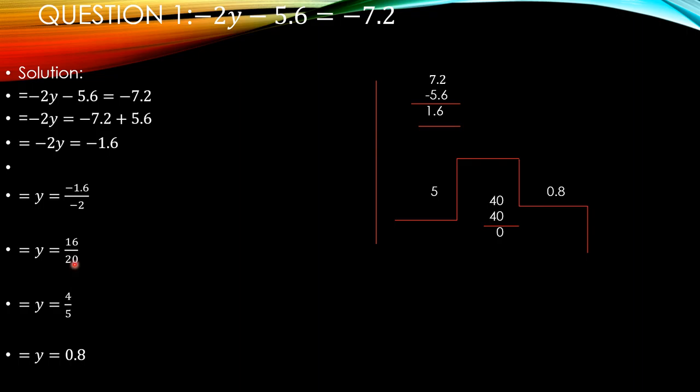Now, 16 upon 20 cancel out with 4. 4 is the 16, 5 is the 20. Now it is 4 upon 5. The question is in decimal, so we will divide 4 upon 5 in the rough column. Numerator inside the division, it is the dividend. And 5 is divisor. Increasing point. We get 0. It becomes 40. 5, 8 are 40. 40 minus 40 is 0. The answer is 0.8, which is the value of y. y is equal to 0.8. Equation is solved.